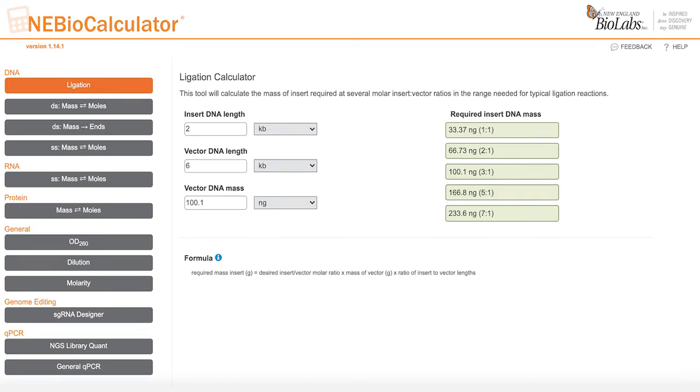When you enter the mass of vector DNA that you want to add to your reaction, you will notice that NEBioCalculator automatically calculates a range of insert masses on the right. We typically recommend starting with a 1 to 3 vector-to-insert molar ratio for an initial ligation, although this depends on the length of your vector and insert fragments.